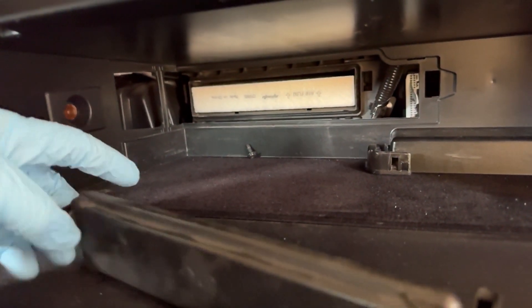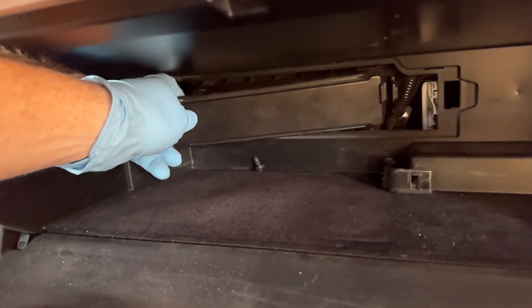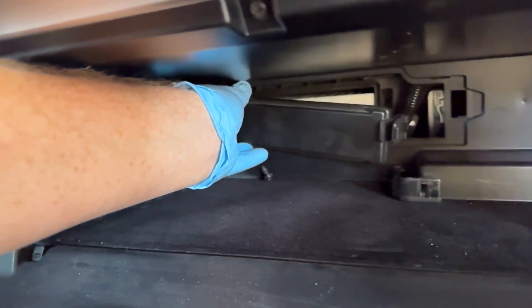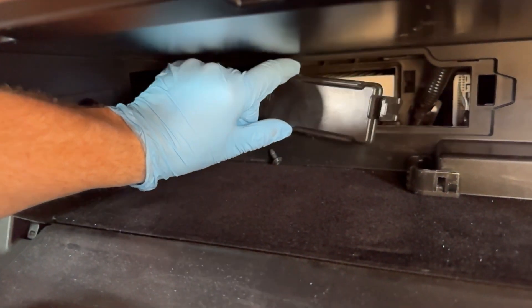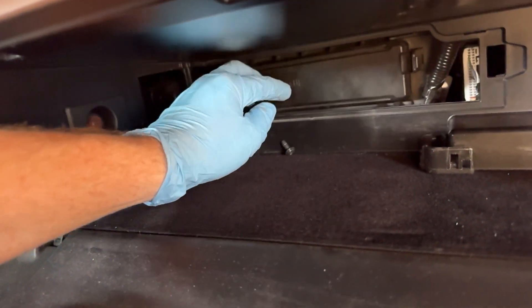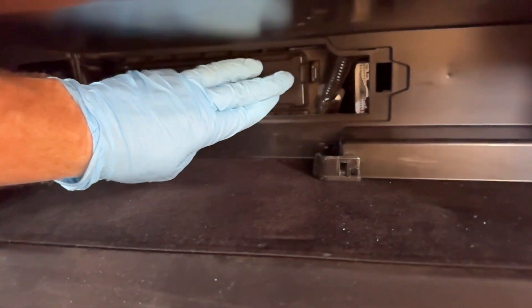Now we put the inner panel on to cover the air filter. I found that it's easier if you clip the left side in first, and then the right side.